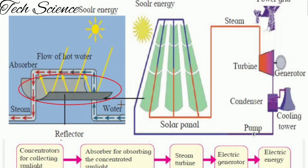The first part is called the reflector, also called the concentrator, which concentrates all the solar energy into a single beam. This is absorbed by the absorber, and when the water flows through this absorber the water gets converted into steam.